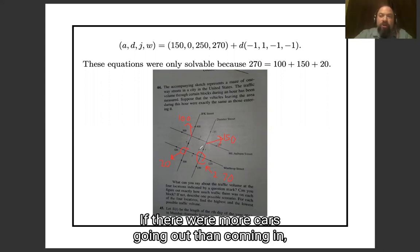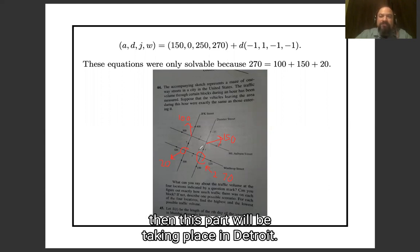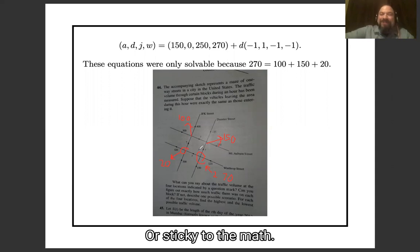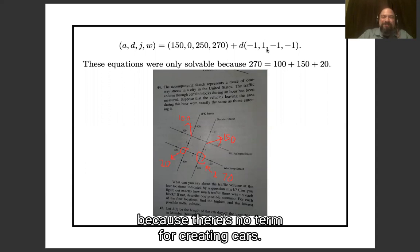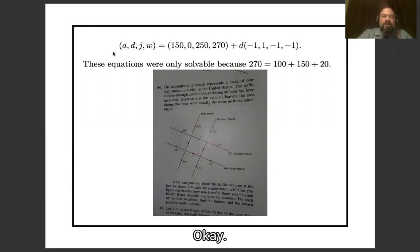If there were more cars going out than coming in, then this problem would be taking place in Detroit or sticking to the math, the equations would not be solvable because there's no term for creating cars.